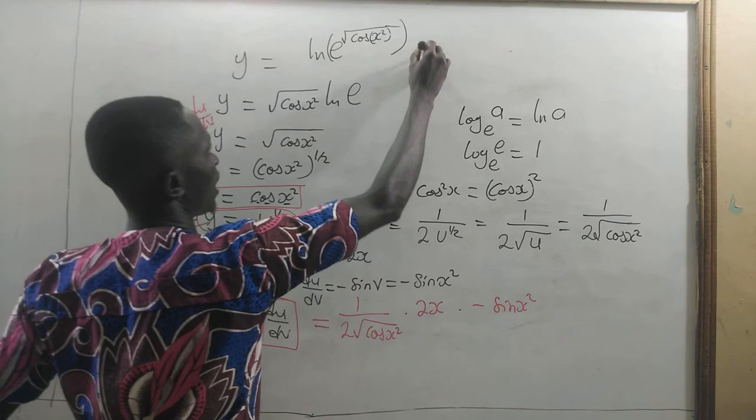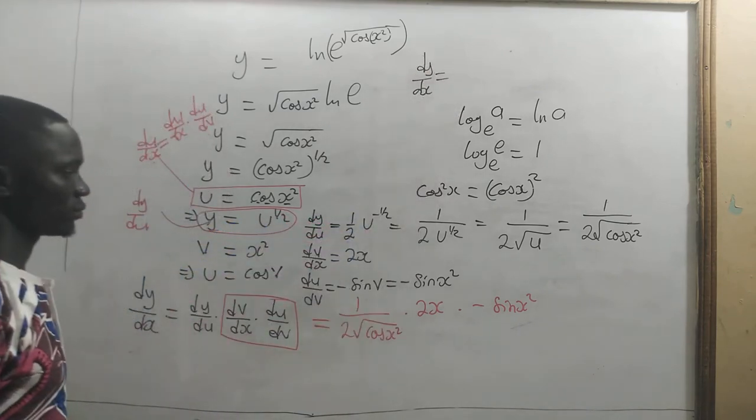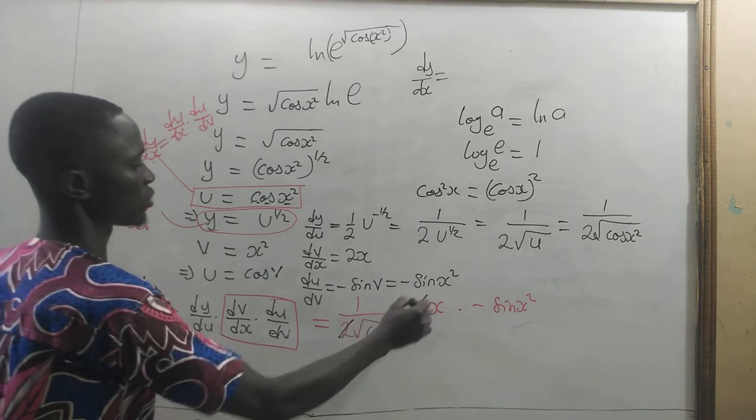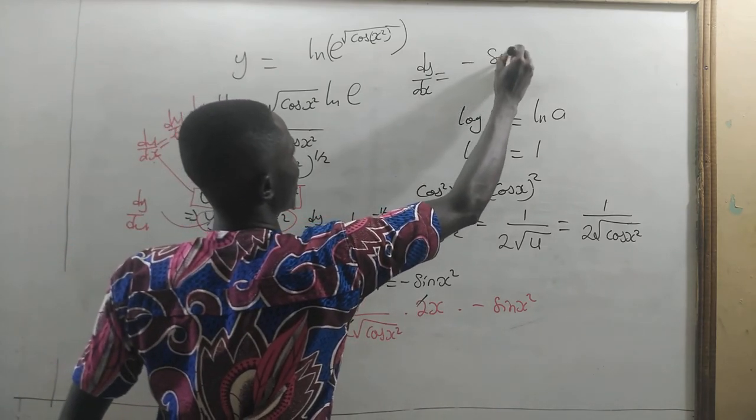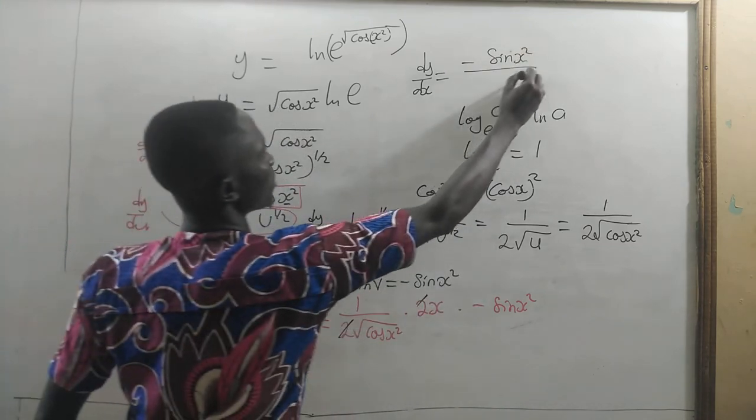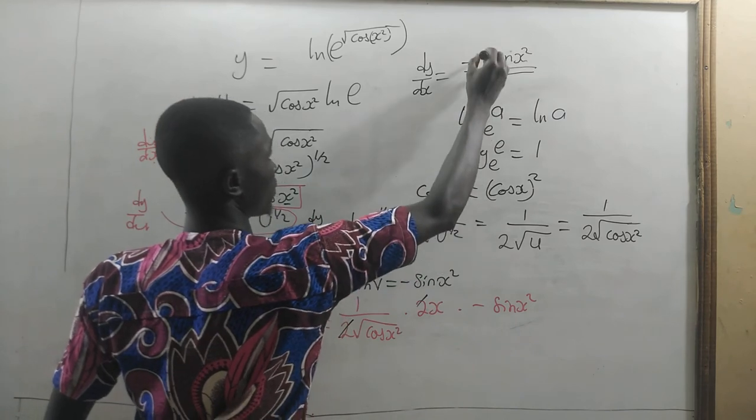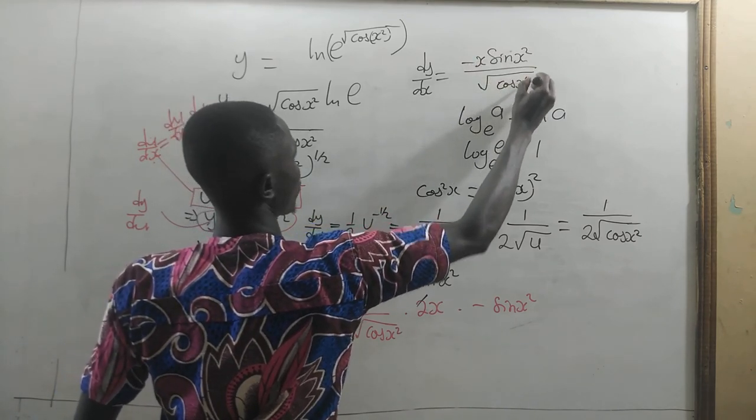And we are going to have the derivative of y which is expected to be equal to... These two will cancel these two. So we have minus sine x squared divided by the square root of cosine x squared. Remember, these two cannot cancel the square root. I have explained it earlier.